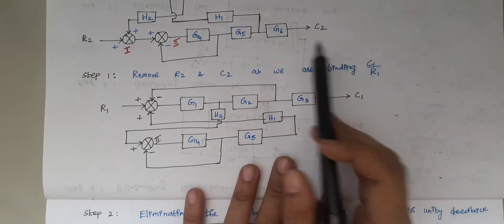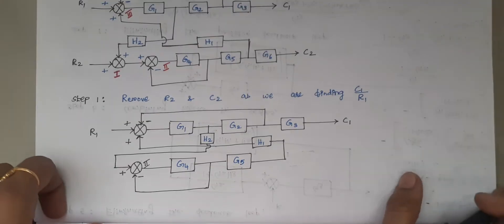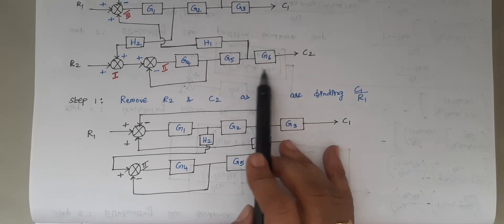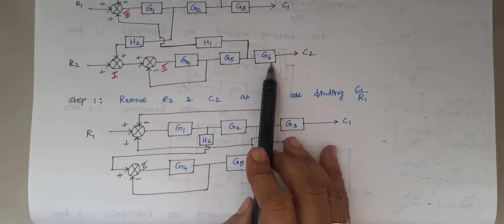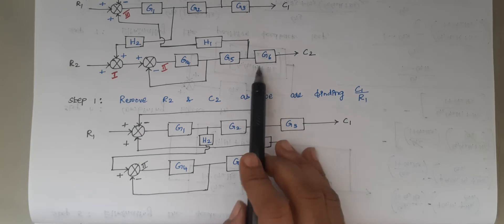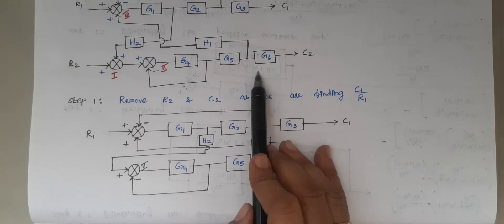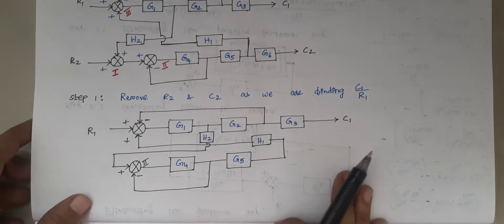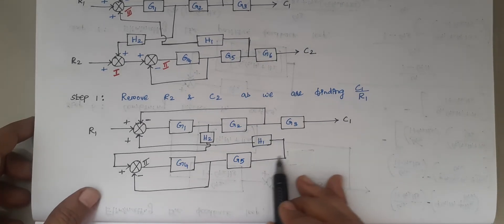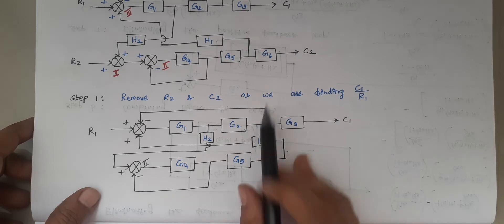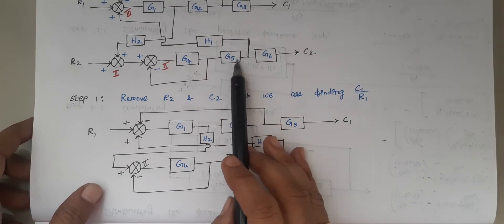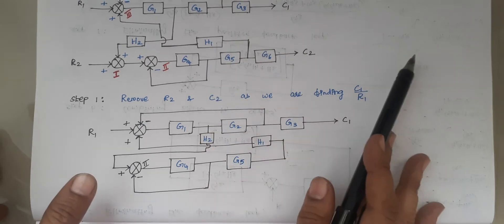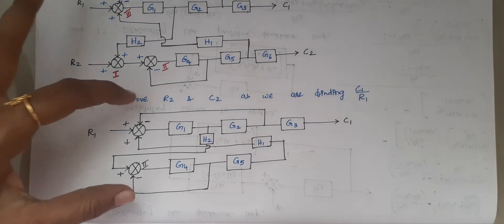Next, I have to remove C2. Since C2 is removed, the value of G6 is essentially zero, so I am removing the block G6 as well. When G6 is removed, the block diagram reduces to G5 connected to H1 — just G5 connected to H1. That is our first step.